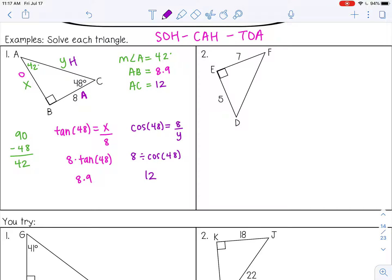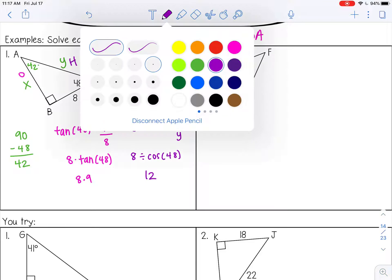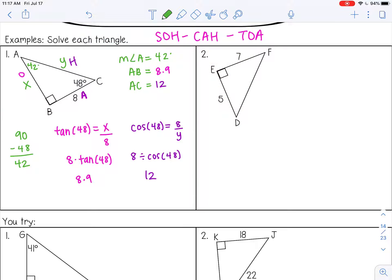You could have also used the Pythagorean theorem to solve for the third side. I'll show you that in the next problem. So problem number 2. In this problem we're given two sides, none of the angles except the right angle. So I'm missing the measure of angle F, the measure of angle D, and I'm missing the hypotenuse FD.